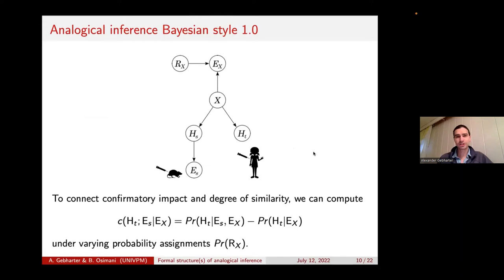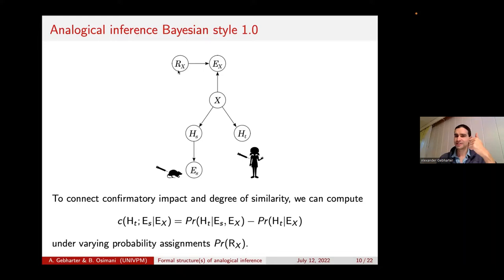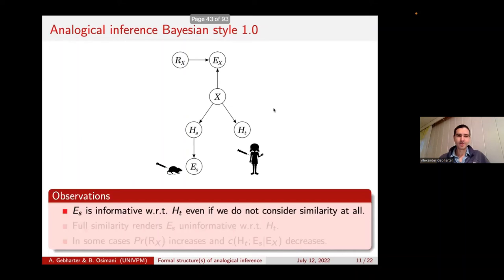The idea is to combine this reliability model with the original Dasgupta et al. model. Now we can connect the confirmatory impact of ES on HT — which is what we are interested in — and the degree of similarity between the source and the target system by looking at the confirmatory impact of ES on HT conditional on the evidence about the similarity EX. We are conditionalizing on this evidence for structural similarity, and then looking at the degree of confirmation ES provides for HT. We can write a probability distribution over RX — increase or decrease it — and that reflects the degree of similarity the agent assigns to the two systems. We can explore all possibilities and different similarities.